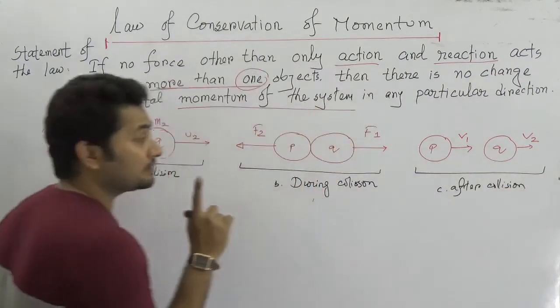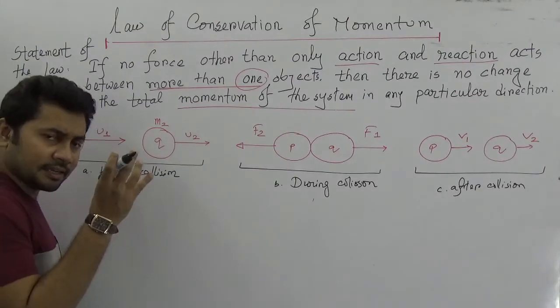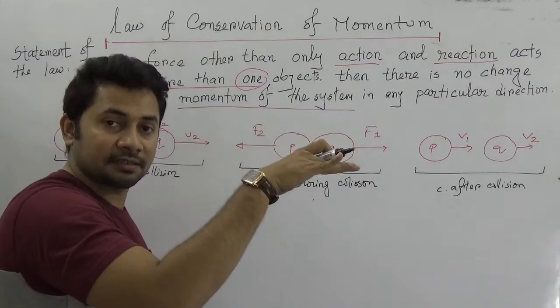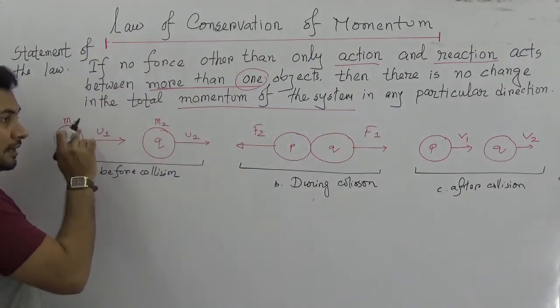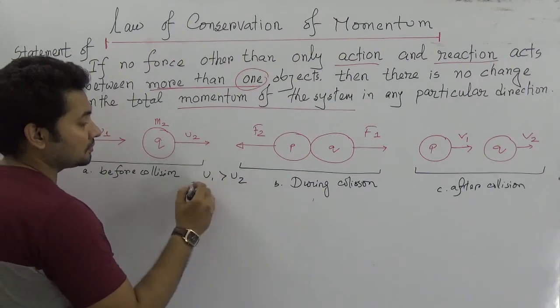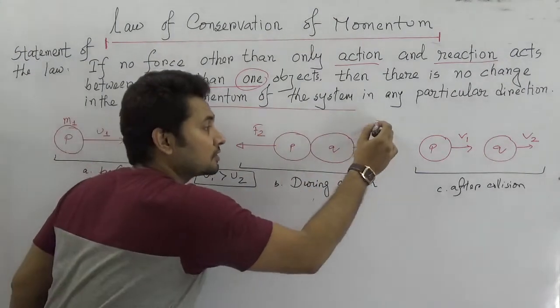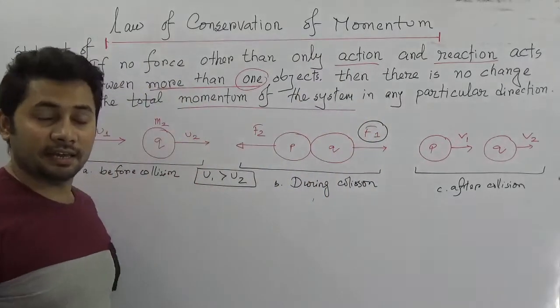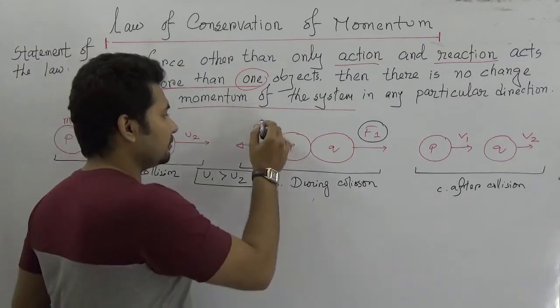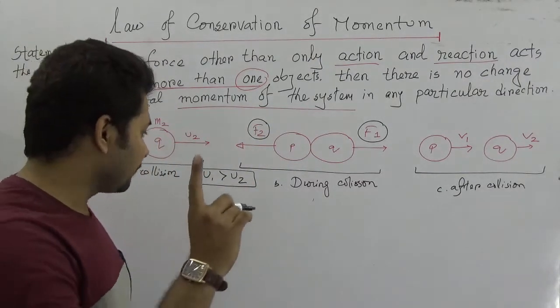So we can say this part is before collision, this one during collision, and this one after collision. What will be going on here is that there are two objects moving in the same direction, and if U1 is greater than U2, then what will happen?